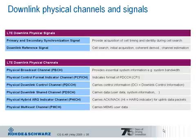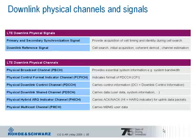LTE uses in the downlink two types of signals. Signals which are purely generated in layer 1, the physical layer. These signals are the primary and secondary synchronization signal, as well as downlink reference signals. Further, LTE uses physical channels which derive the information — data — to be transported from higher layers, layer 2 and layer 3.